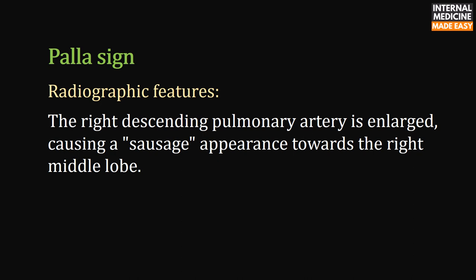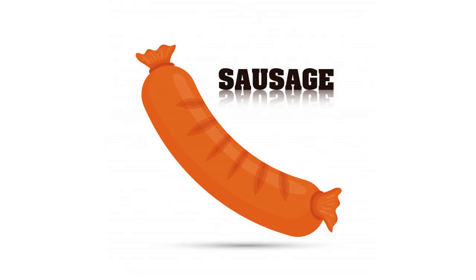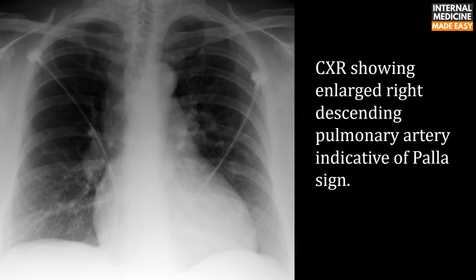Radiographic features of the Palla sign: the right descending pulmonary artery is enlarged, causing a sausage-like appearance towards the right middle lobe. This chest X-ray shows an enlarged right descending pulmonary artery, indicative of the Palla sign.